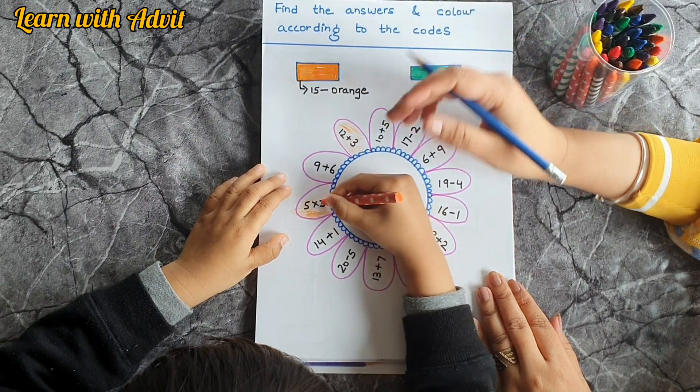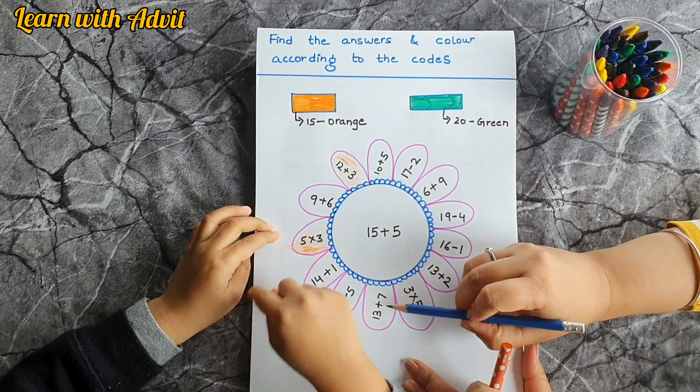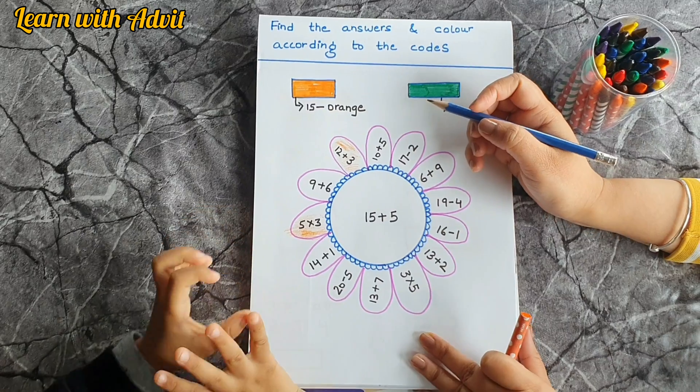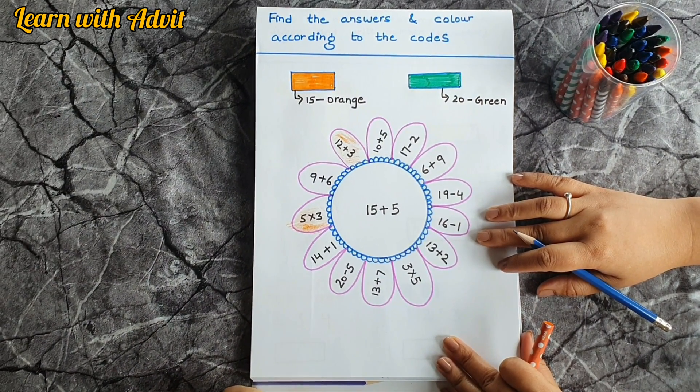So now 5 into 3 is 15, so again it is orange. Okay, so now tell me one more here: 13 plus 7 is 13 plus 7 equals 20. So which color? Green.